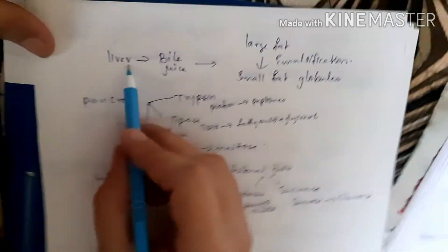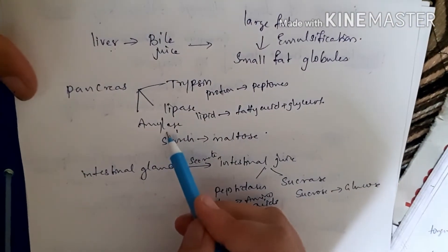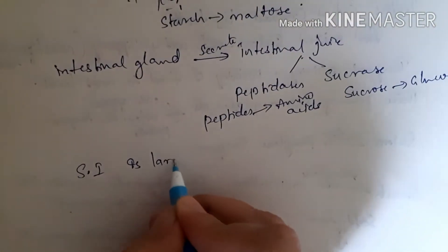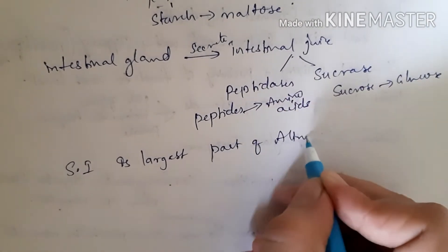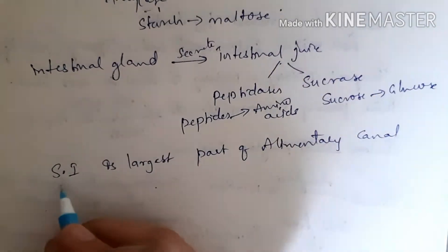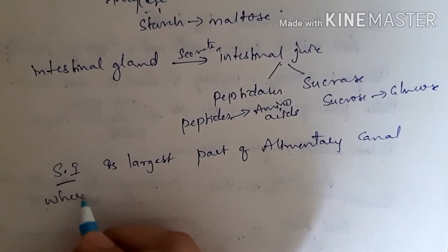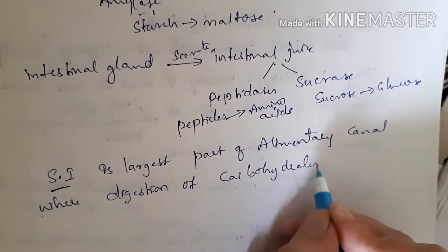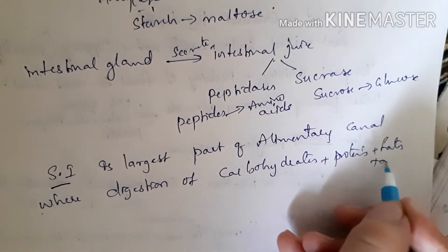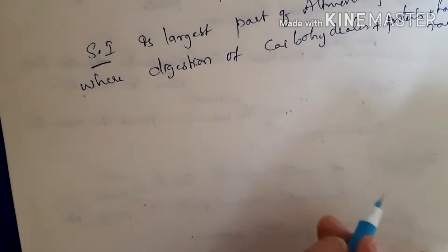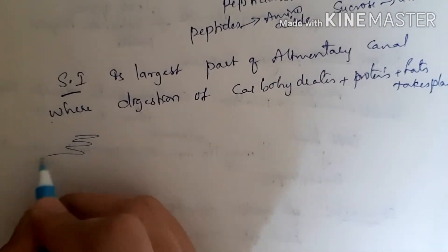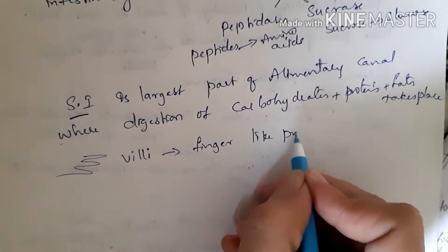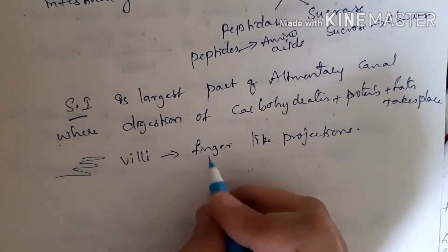So this is the process of digestion in the small intestine, where fat digestion, carbohydrate digestion, lipid digestion, and protein digestion all take place. The small intestine is the largest part of the alimentary canal, where digestion of carbohydrates, proteins, and fats takes place. In the small intestine there are finger-like projections called villi.